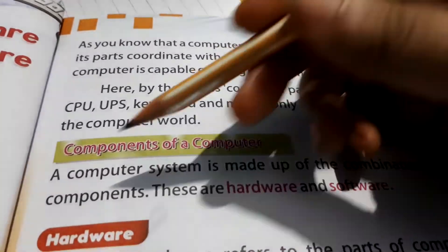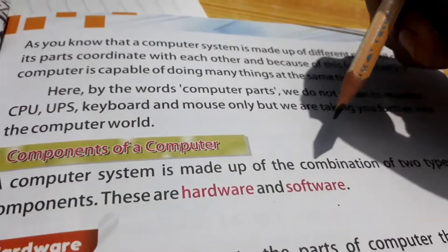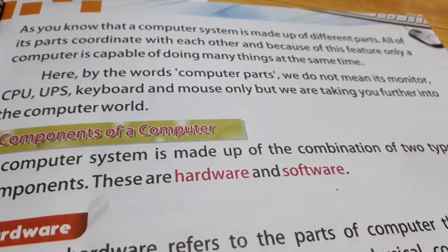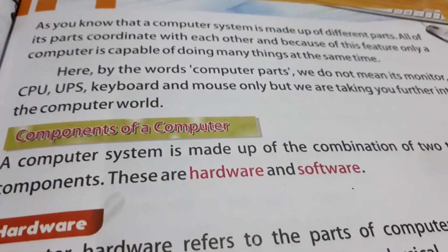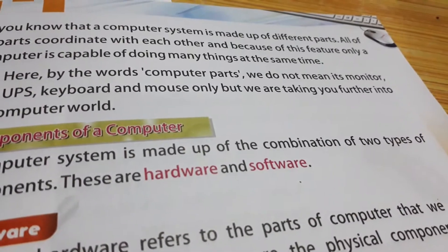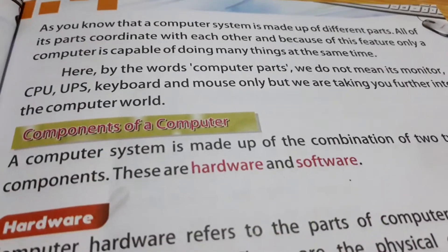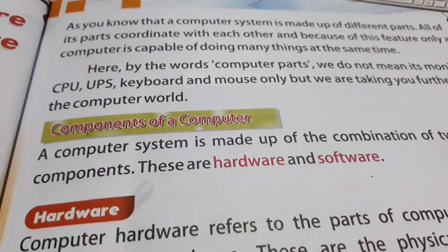Components of computer. A computer system is made up of a combination of two types of components. These are hardware and software. So what are our computer? What are the two types? What are the combination? It is related to two things. First is hardware and second is software.